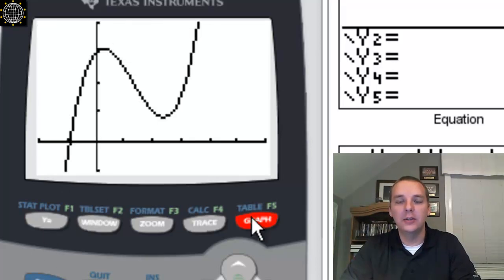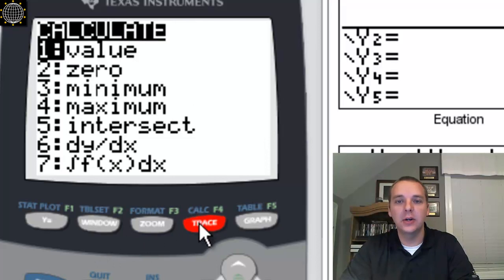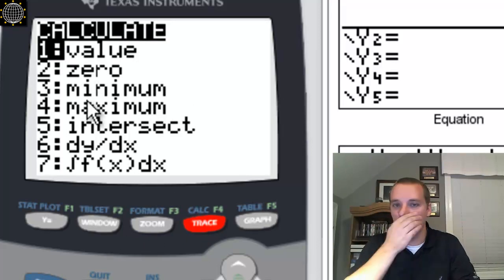So anyway, so we got this guy graphed, and so we're going to push—alright, follow me now—second calc, second calc, that's the trace button there, and it'll bring up a list of options and you'll find number 7 is the integral symbol.